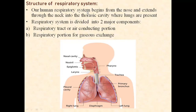So what is the thoracic cavity? Thoracic means chest, so the thoracic cavity is our chest cavity. See in this picture — this is our nose where our respiratory system starts. The end point is our lungs; we have two lungs, this is one lung and this is another lung.